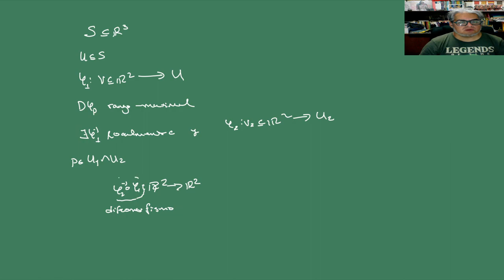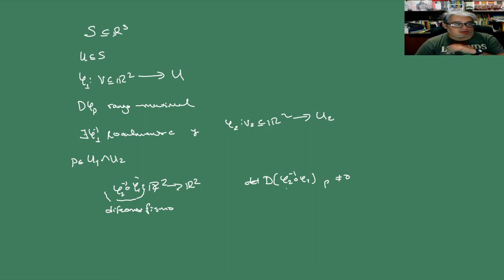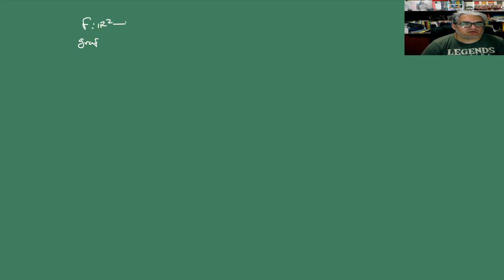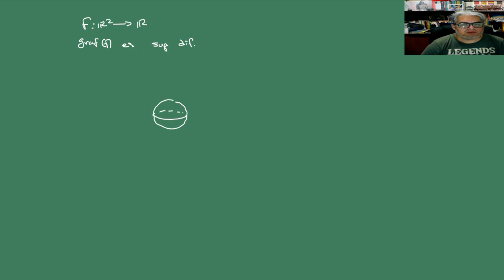A esta composición le vamos a pedir que sea un difeomorfismo, y para eso al menos nos basta ver que el determinante de phi₂⁻¹ compuesta con phi₁ en cualquier P no se anula, que esta cosa es invertible, y que si es invertible seguramente es diferenciable. También vimos que la gráfica de una función que va de R² en R es una superficie diferenciable.